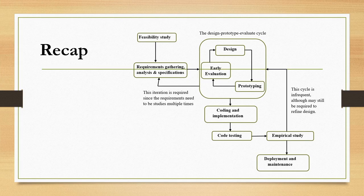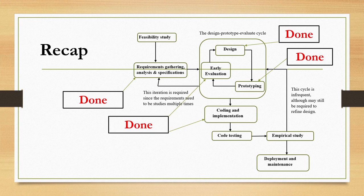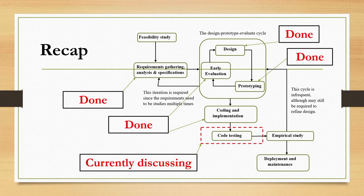Before we start, let us quickly recap what we learned and where we are now. We are discussing the interactive system development life cycle. There are several stages in the life cycle. We have already covered the requirement gathering stage, design-prototype-evaluate cycle, code design stage, coding and implementation stage, and currently we are discussing code testing — that is, once the system is implemented, what we do for testing the efficacy of the code.